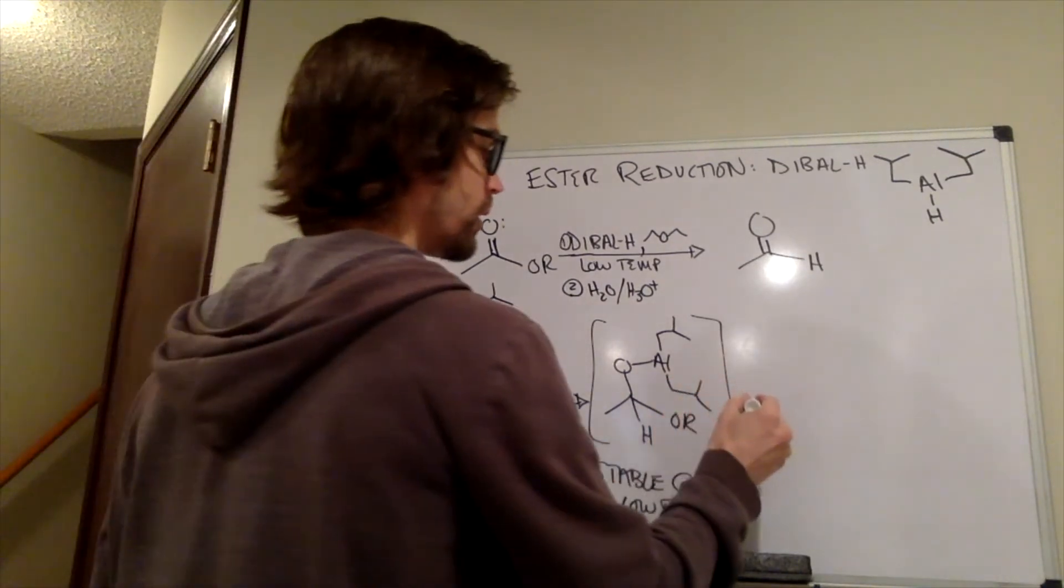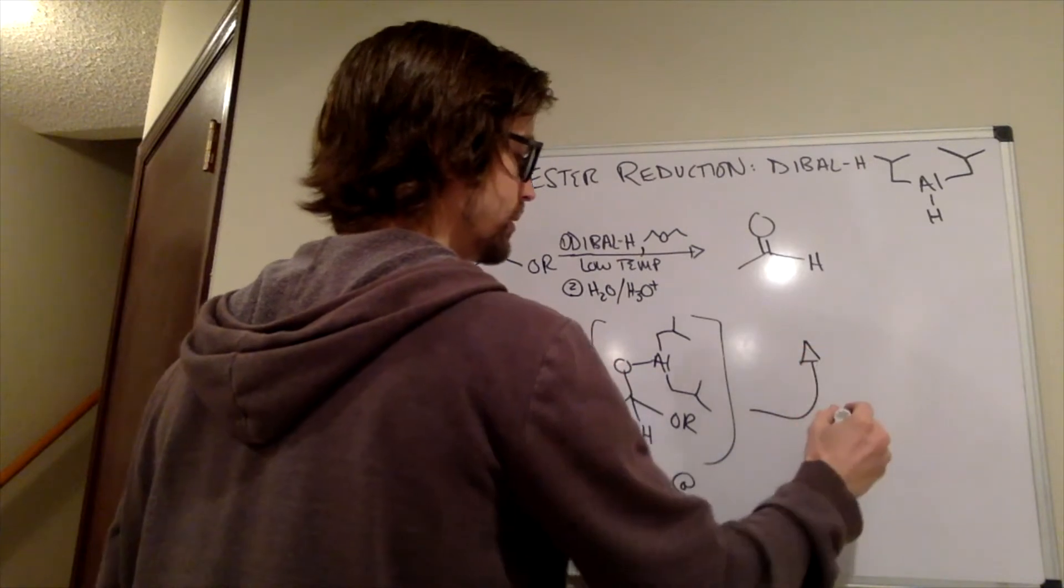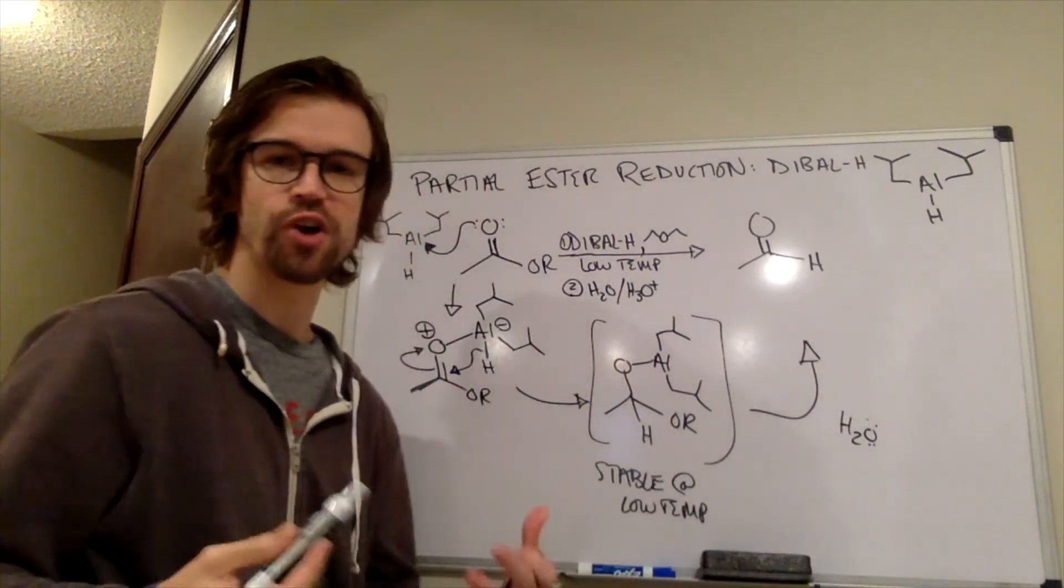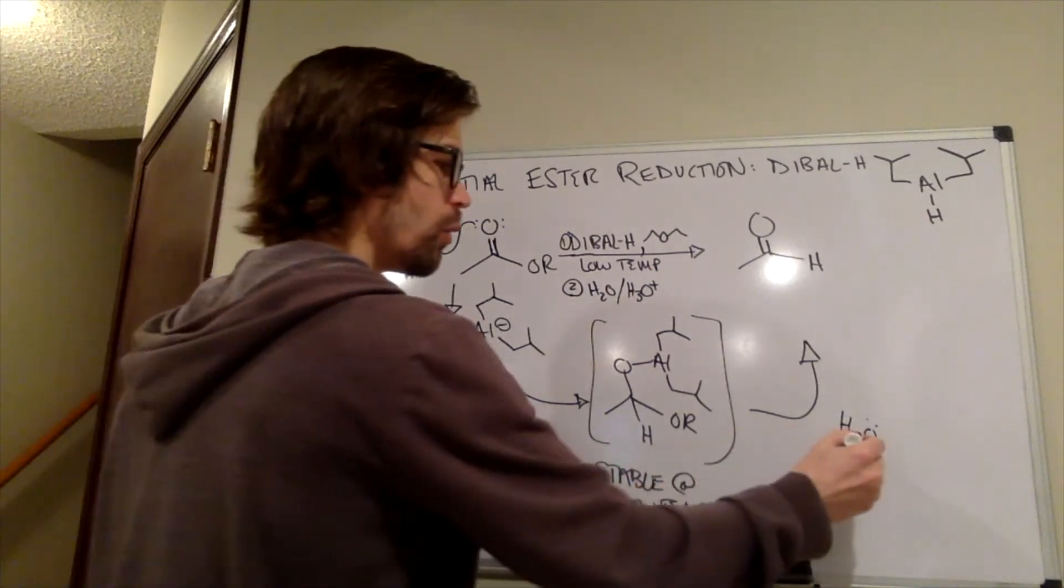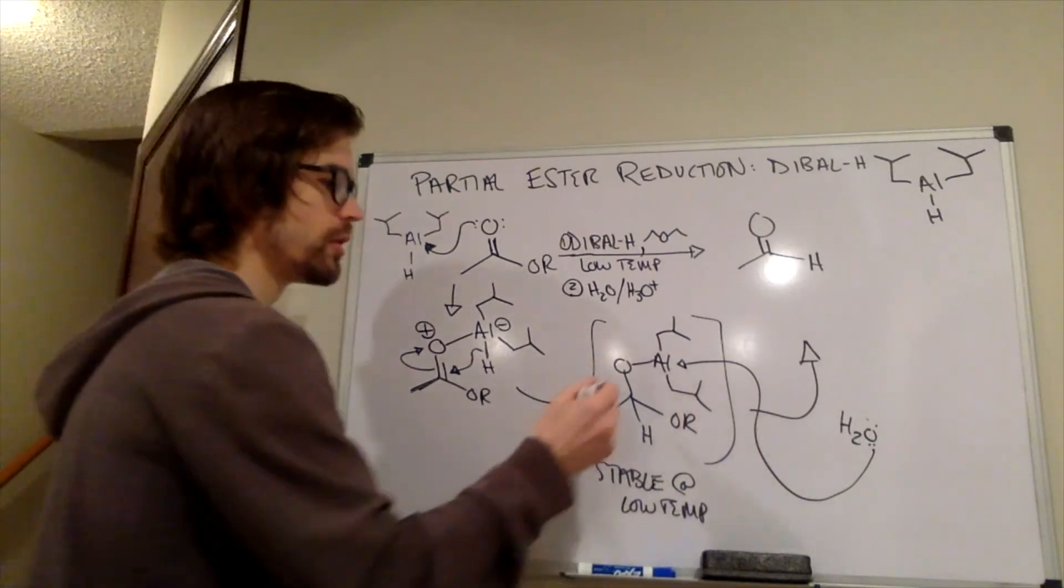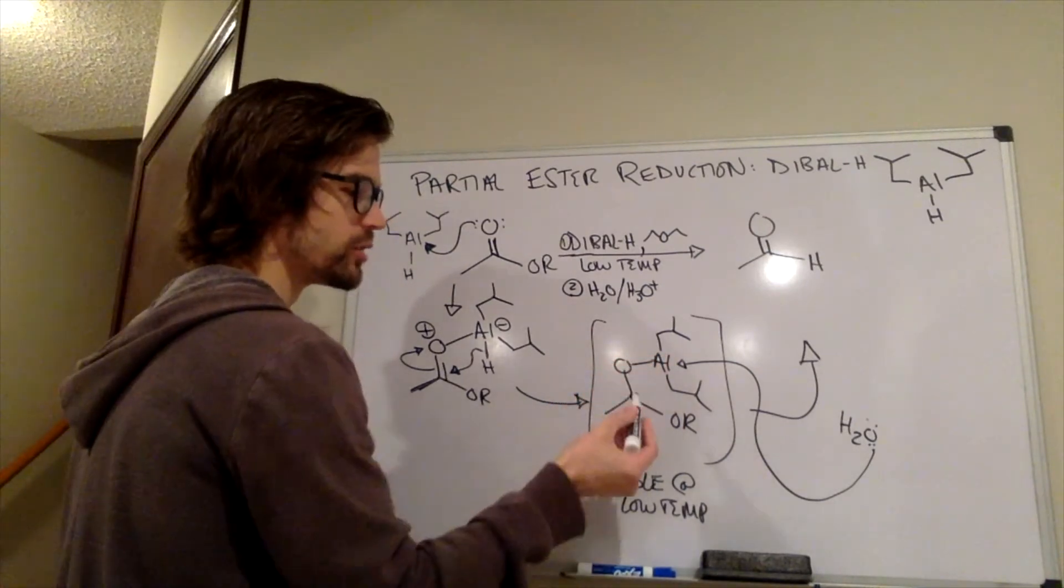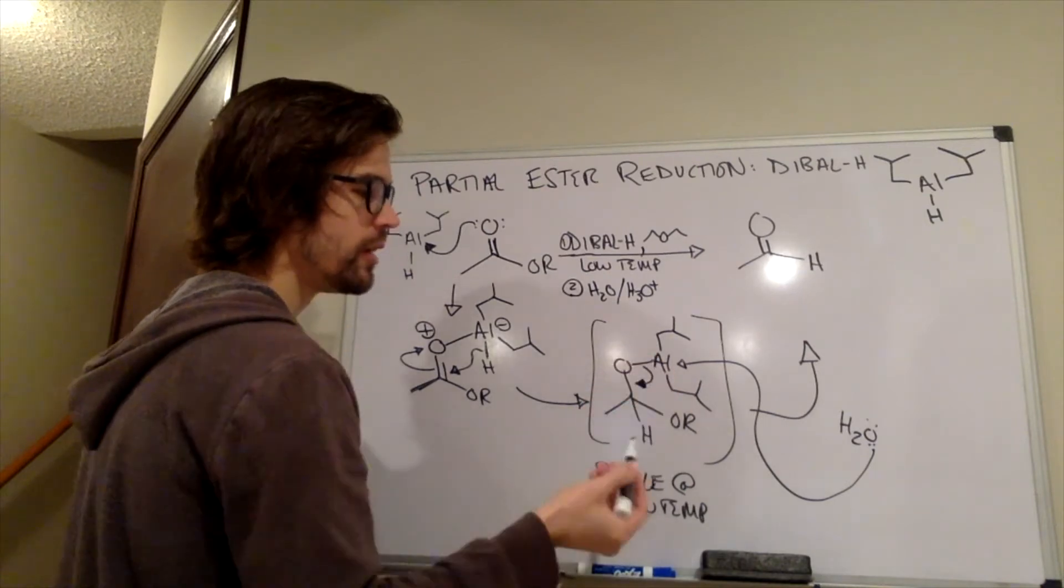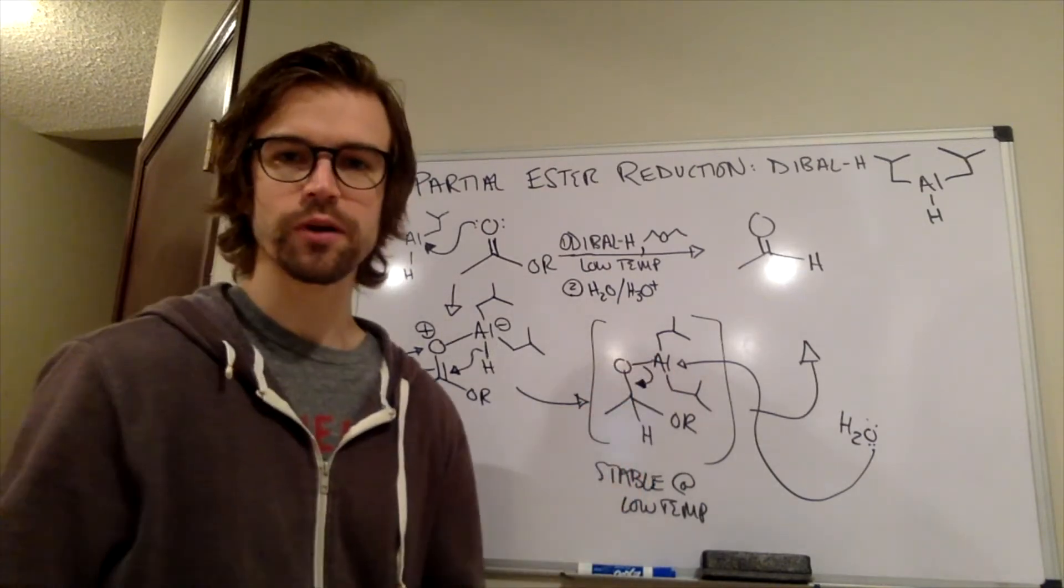So essentially, we add water and acid to this, and the water, oxygens have a strong affinity for aluminum. The water is going to be attracted to that aluminum. And when it comes into contact with it, this O-aluminum bond is going to weaken, allowing it to come down and form a pi bond. And then the best leaving group is going to leave.